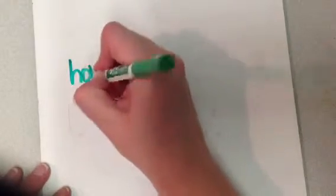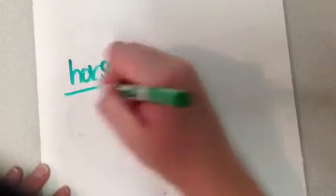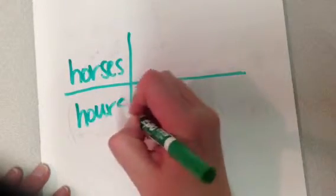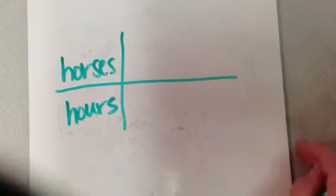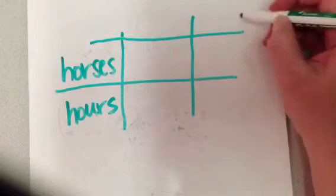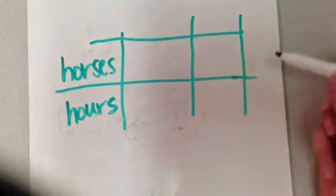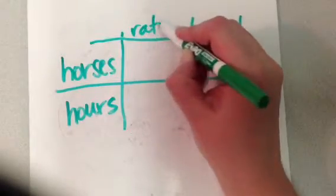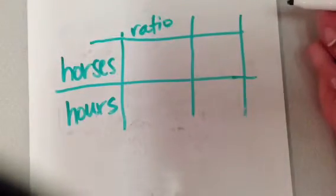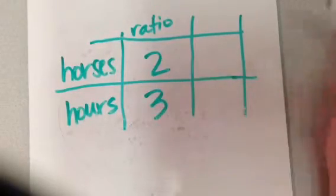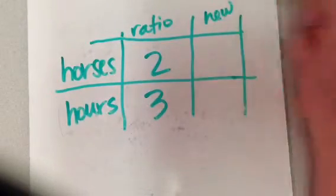So in this, I'm comparing horses to hours. Sometimes in a word problem like this, it's good to sort of write out a little chart for yourself. I like to do it because it keeps me from getting really confused. So that's always good. So this is my original ratio. You don't want to get confused in math, right?